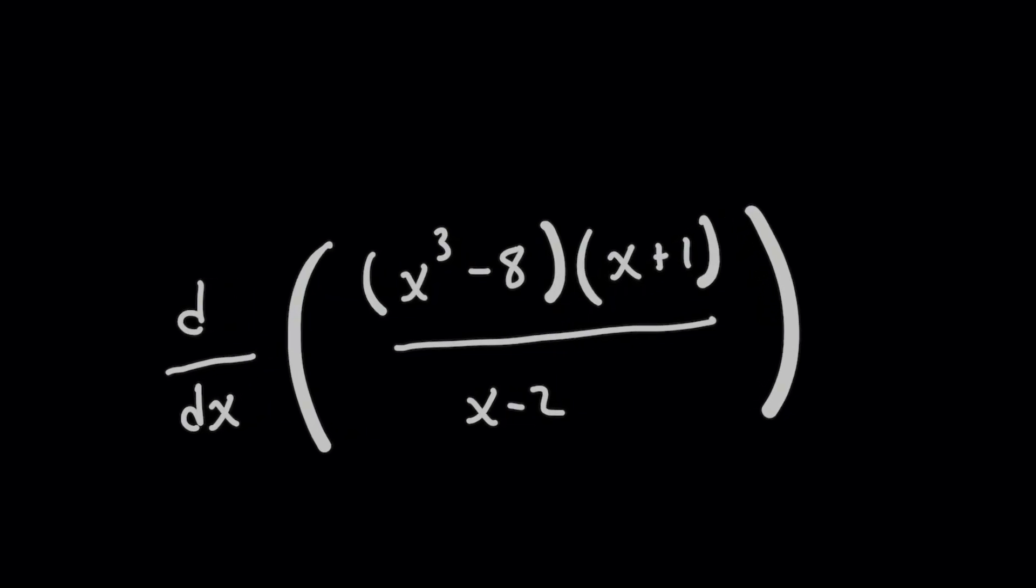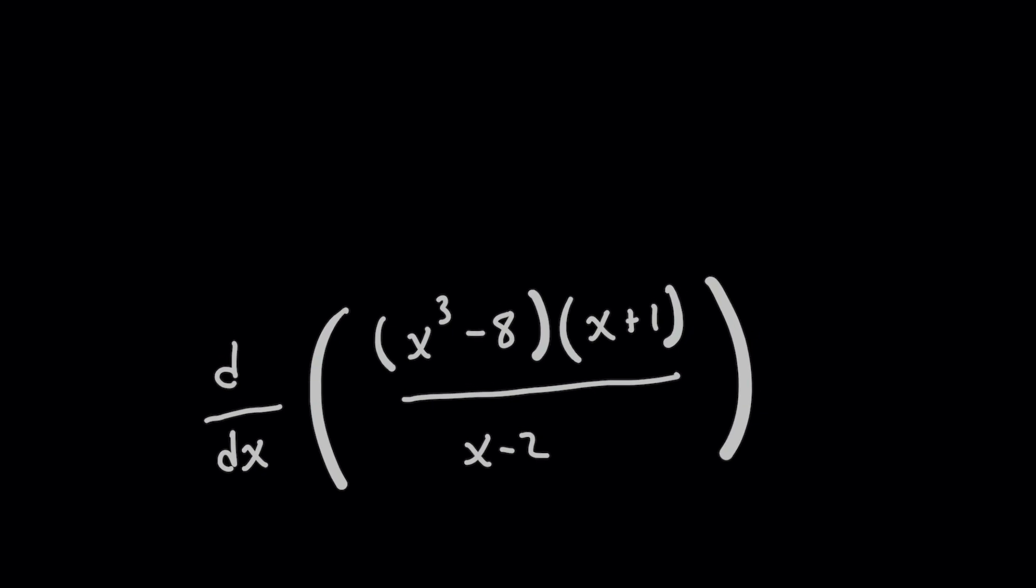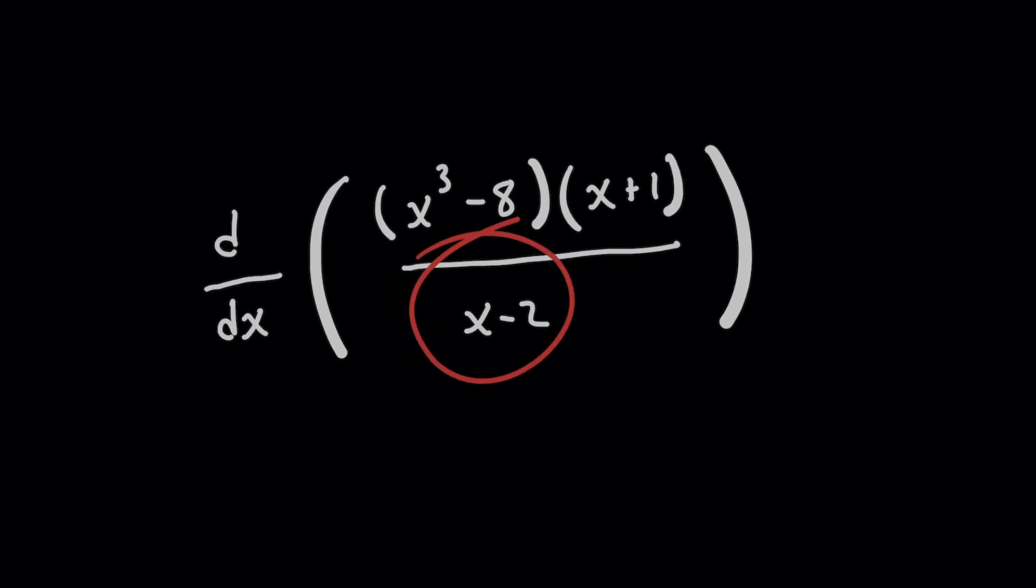Don't waste time on an exam using the more complicated quotient rule here because there's a faster method. When I see a fraction like this that has x minus 2 on the bottom, I first check to see if it's a factor that can also be canceled from the numerator.